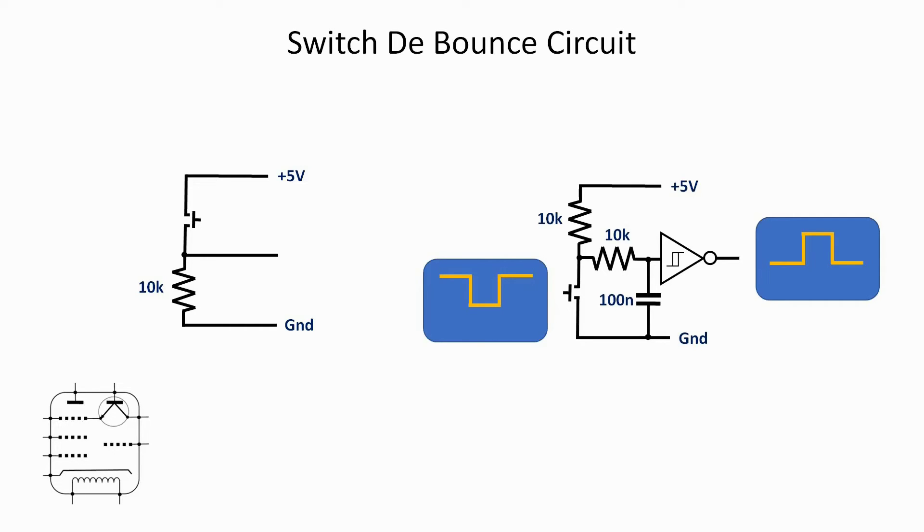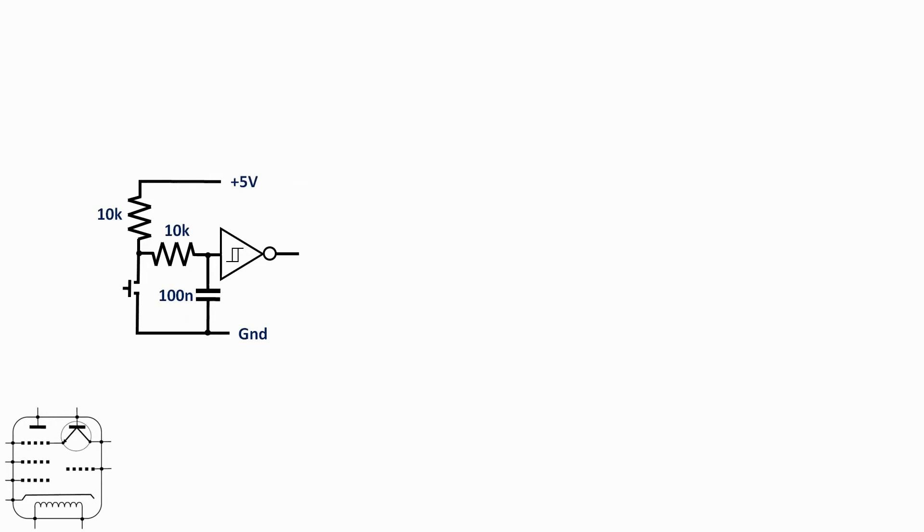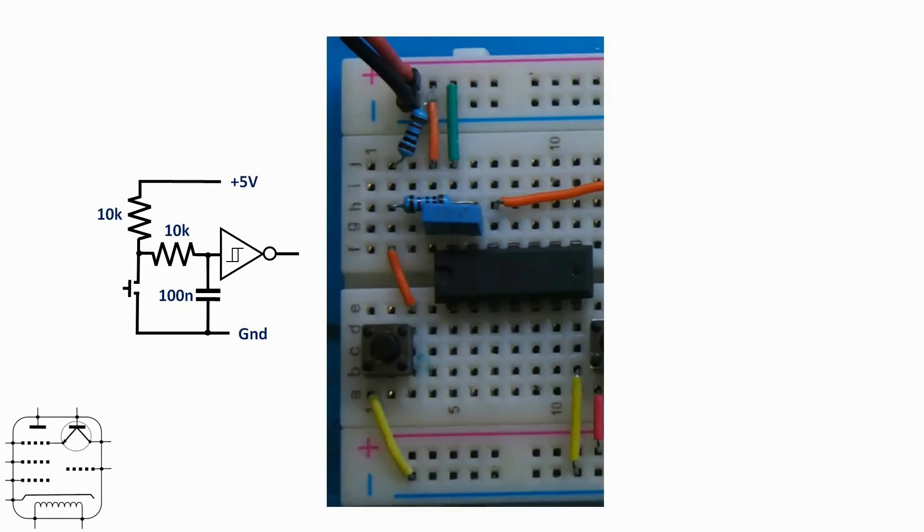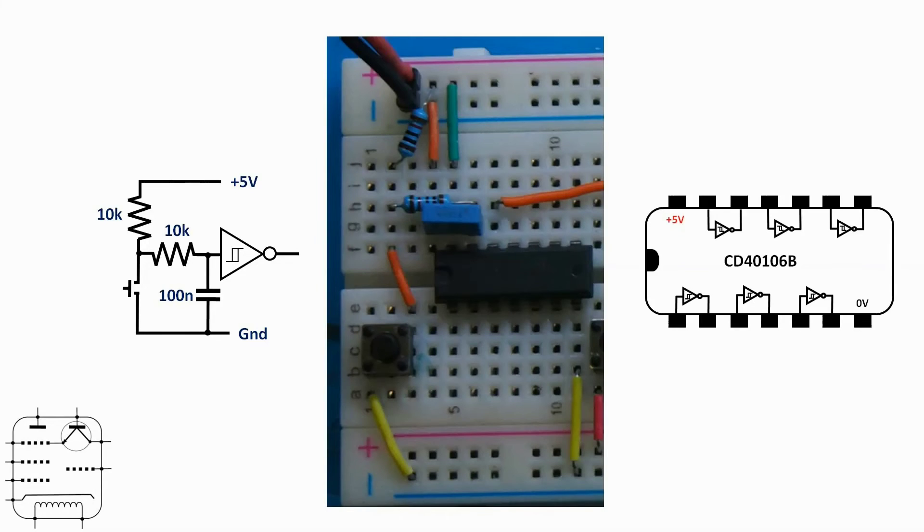Implementing that on the breadboard then, really nice and simple. There's a circuit, here's a photograph of the left-hand side of the board there. I'm making use of one of the Schmidt triggers on the 40106, it's just that top left-hand one between pins 12 and 13. You can hopefully see the blue 100 nanofarad capacitor and then the two resistors with the switch that pulls down to ground when pressed.